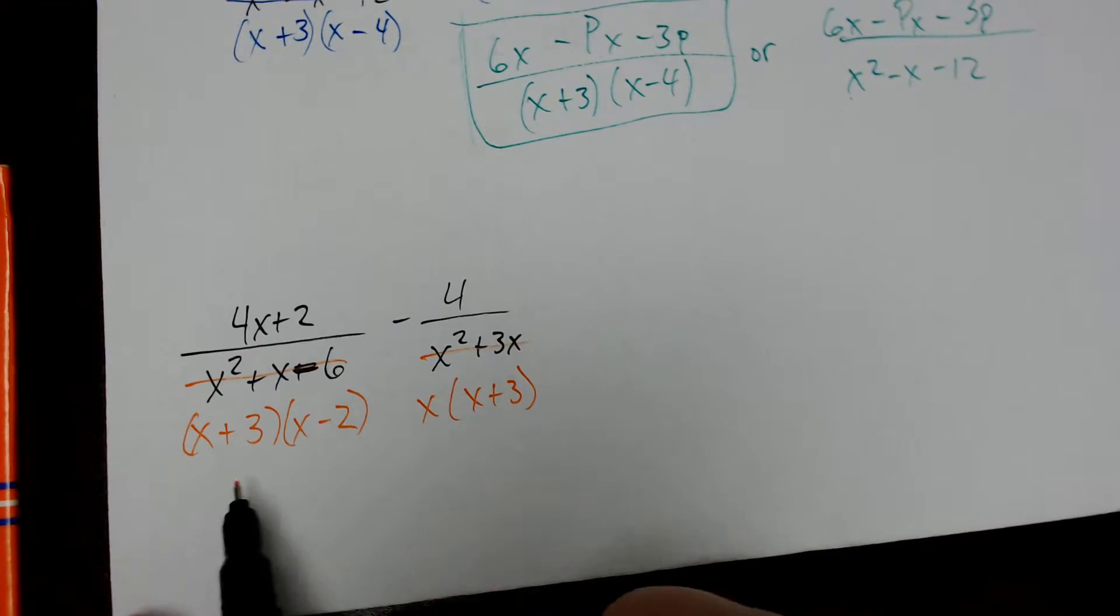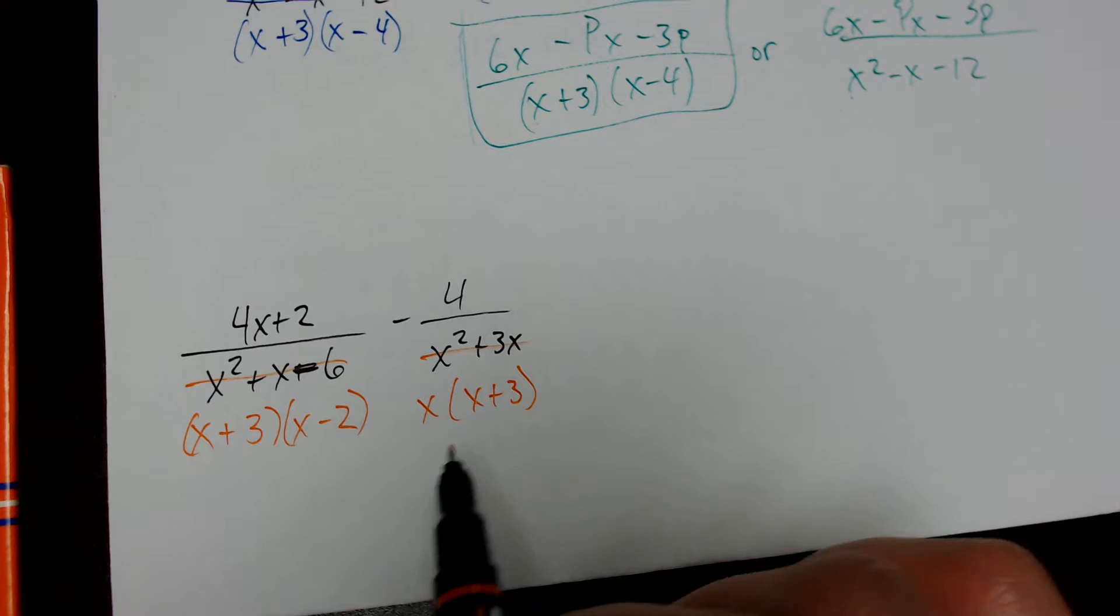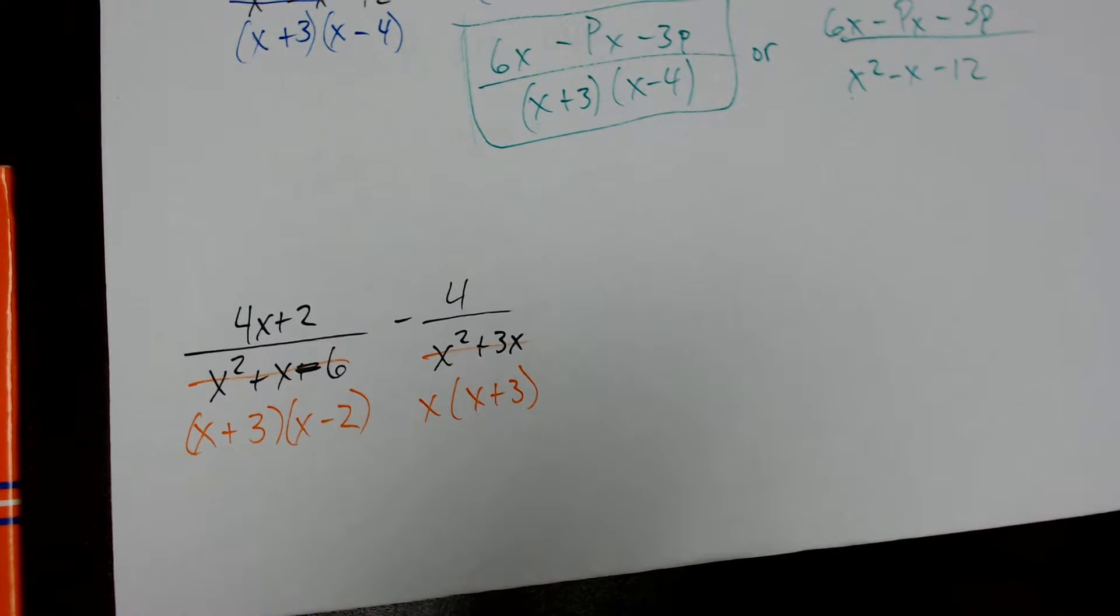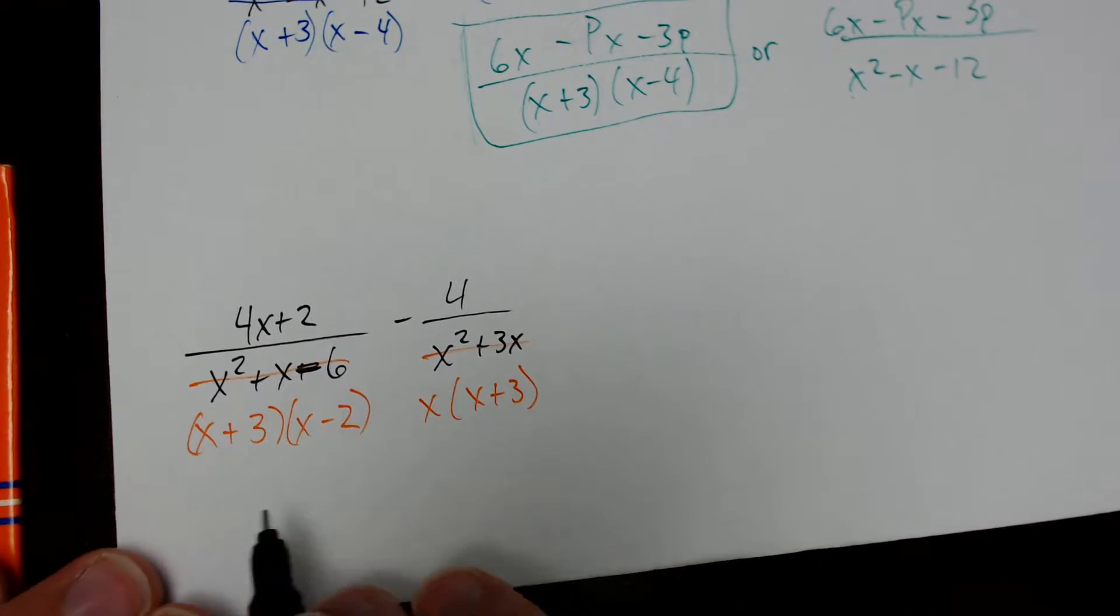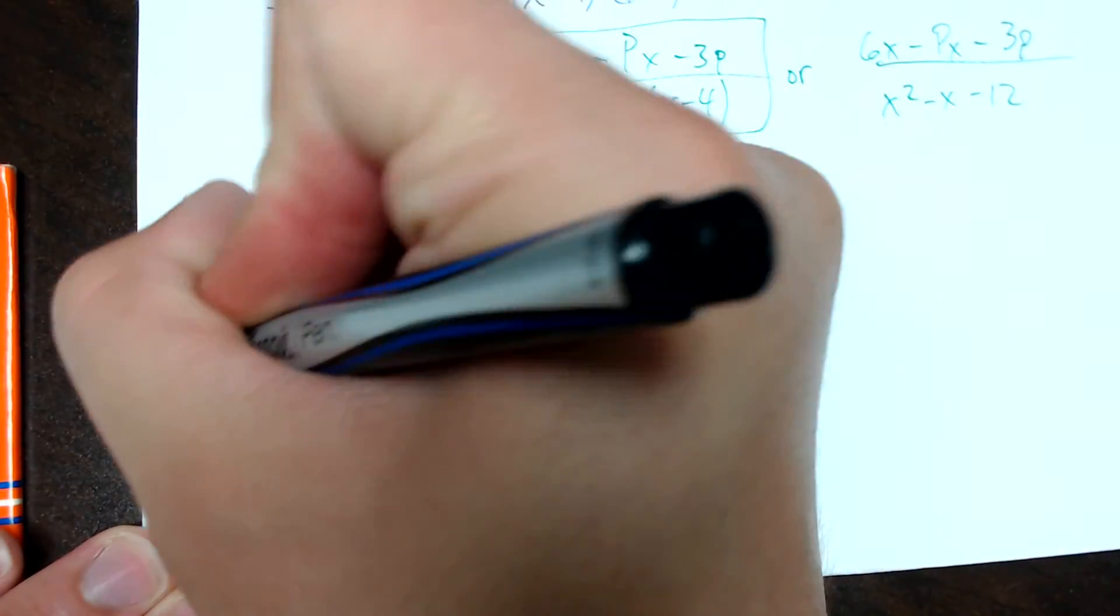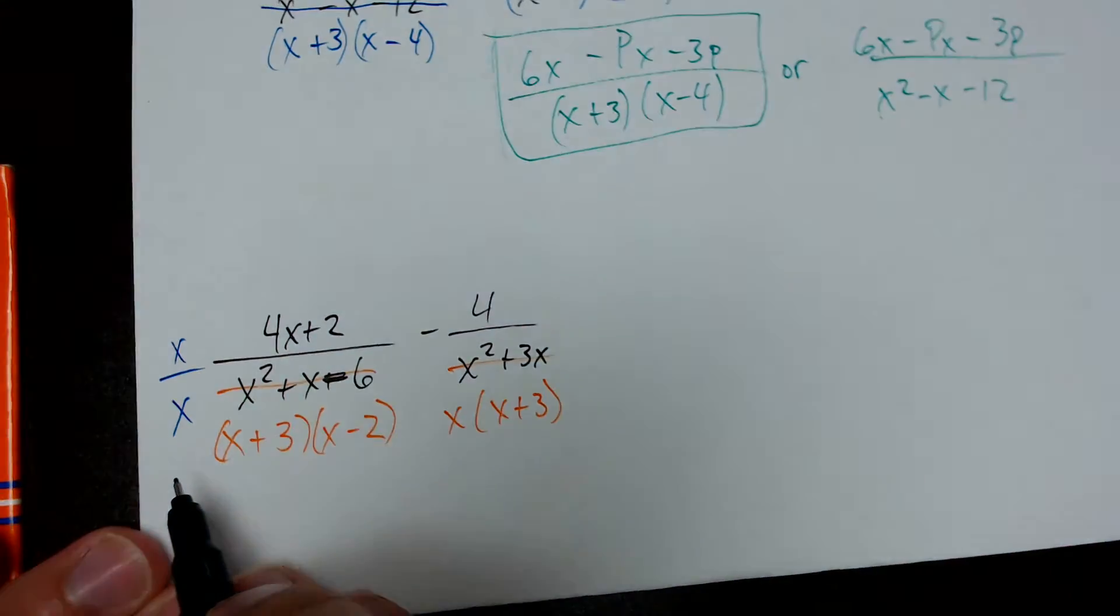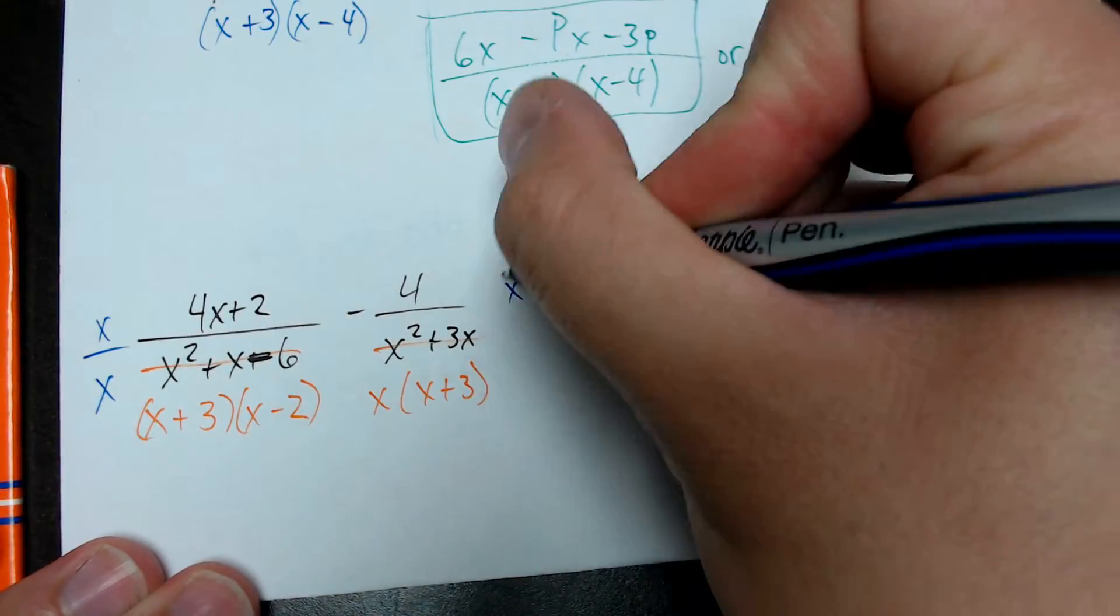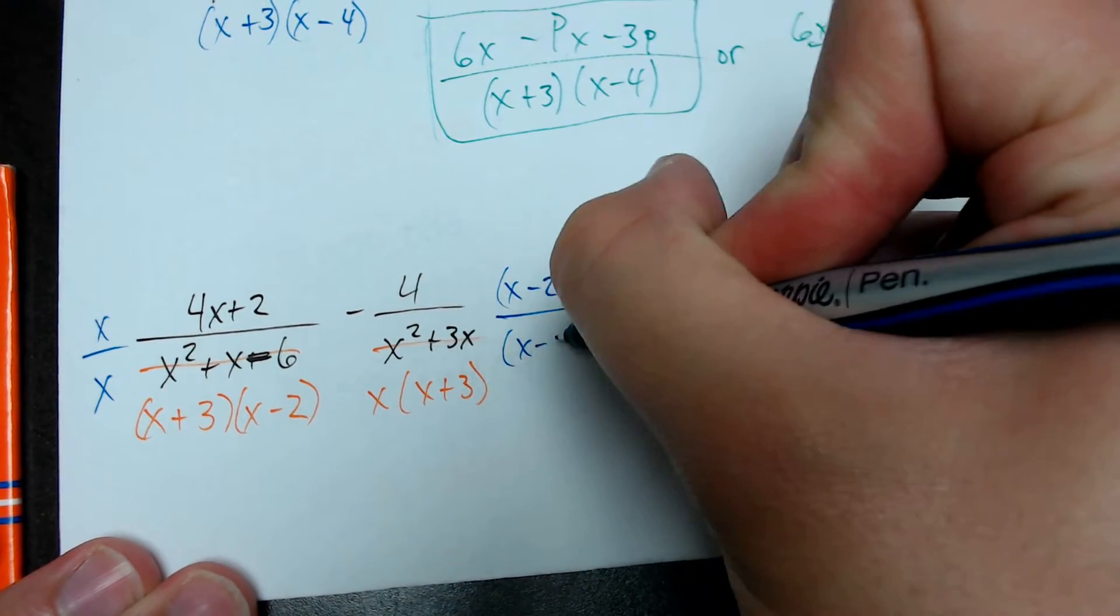So, now, I've got two kind of different looking denominators, but they can both be fixed. So, the one on the left, the only thing that I'm missing for the least common multiple is x. So, I can multiply this one by x over x. This one, I'm missing x minus 2. So, this one gets multiplied by (x - 2) over (x - 2).